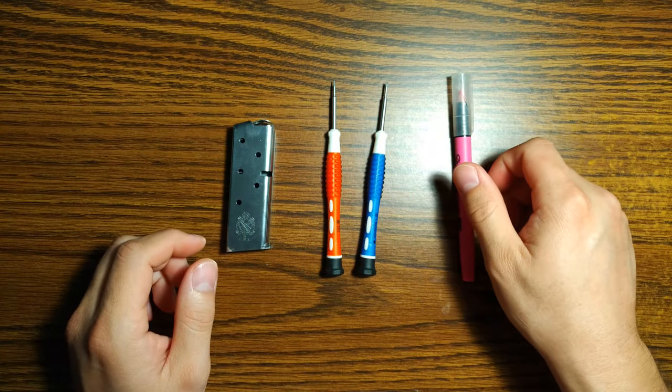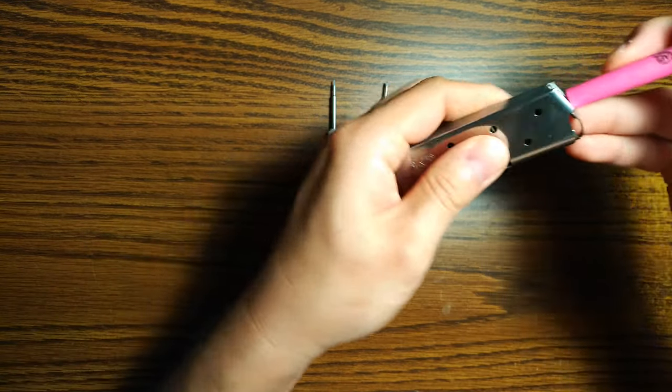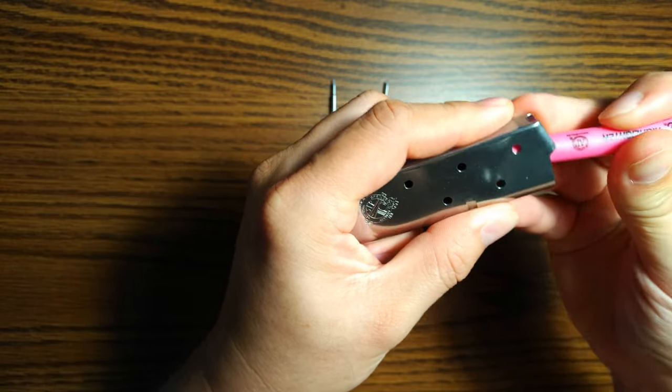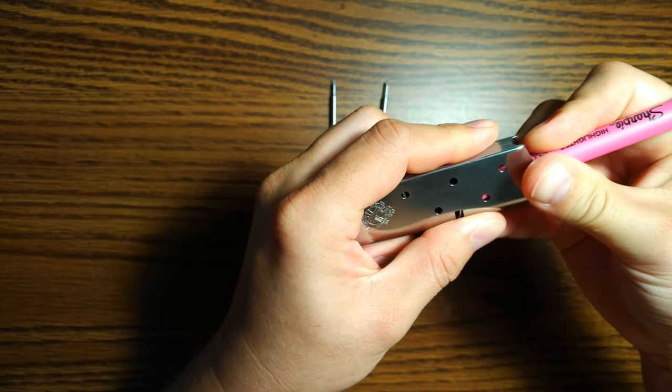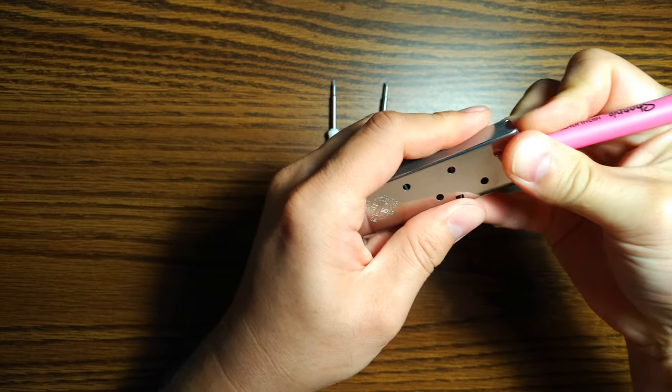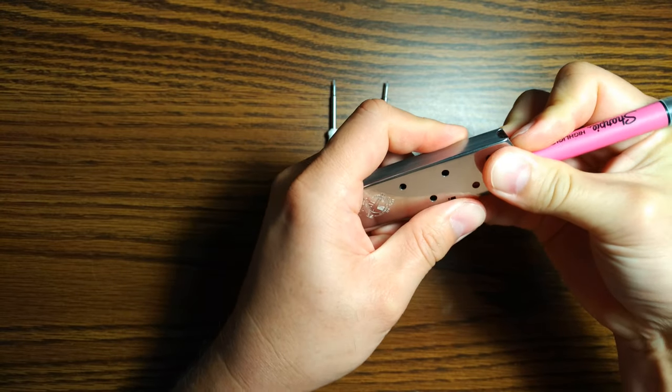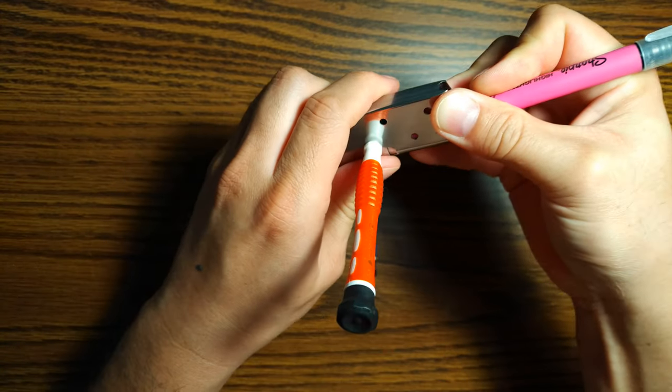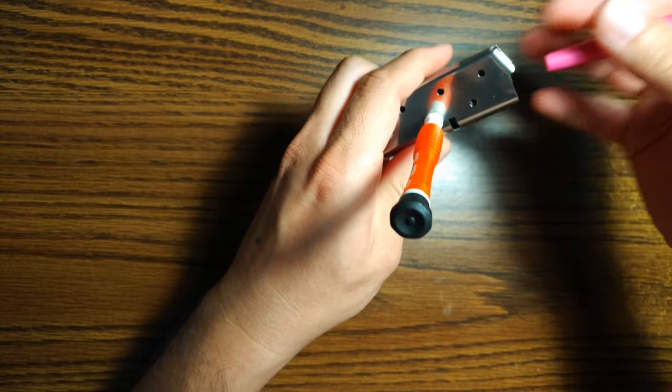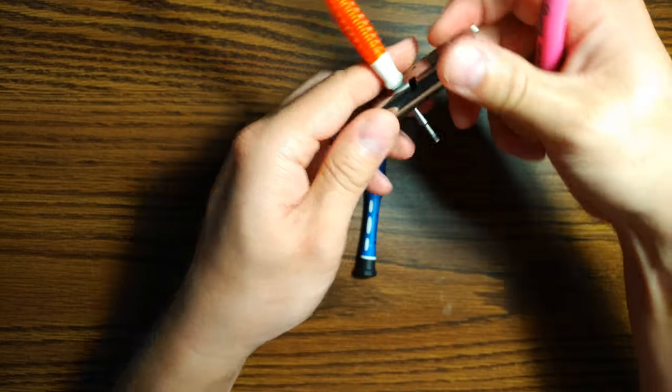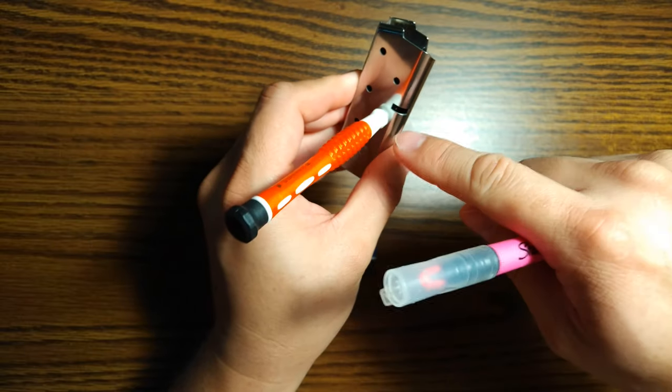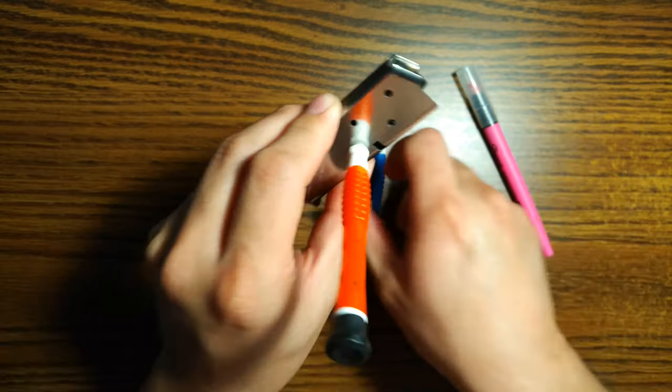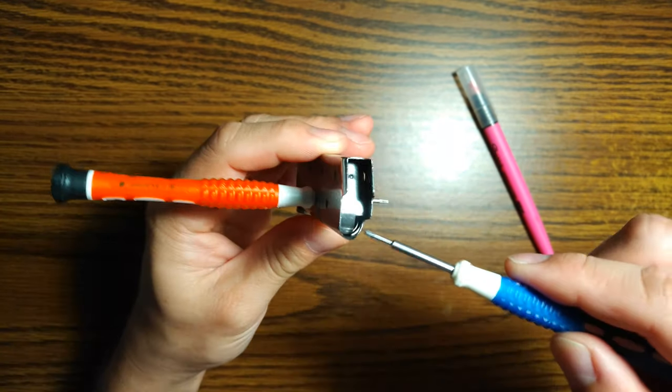Basically what you need to do is push the follower down maybe at least like halfway. You don't have to push it all the way down, but push it enough to where you can capture the spring. Don't capture the follower itself. Just put it through the witness hole all the way through to the other side where you see spring, not the actual follower. So the follower is actually kind of free right now. I'm not sure if this is down low enough. It might not be.